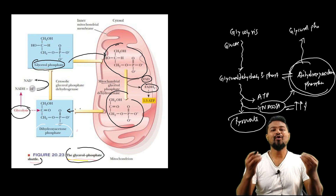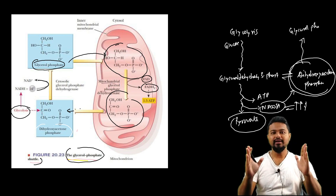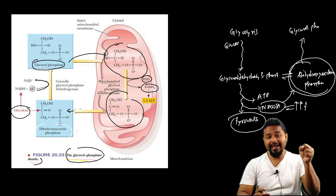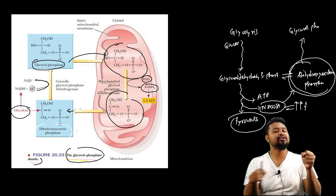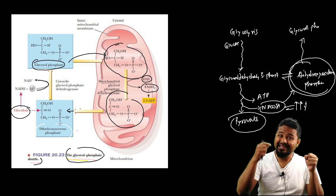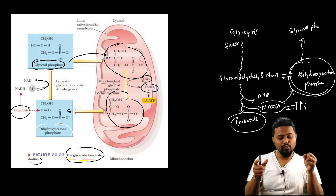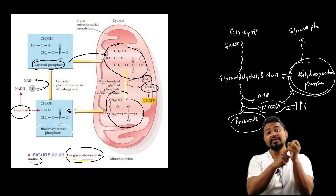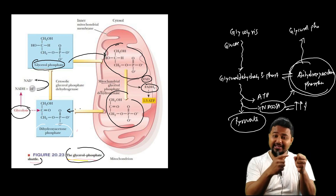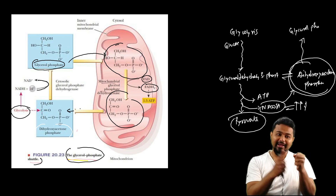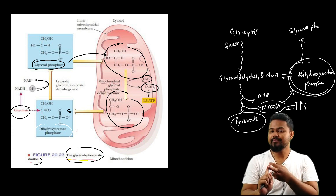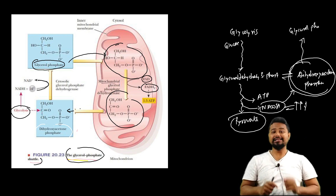So this was all about the NADH shuttle. The main thing is that NADH is produced in the cytosol during glycolysis. This NADH needs to reach the mitochondrial matrix for the electron transport chain so it can be converted into ATP. There are two shuttle systems: the Malate-Aspartate shuttle system and the Glycerol Phosphate shuttle system.